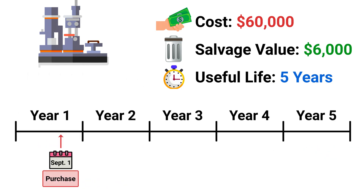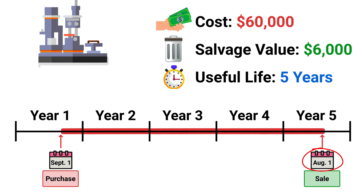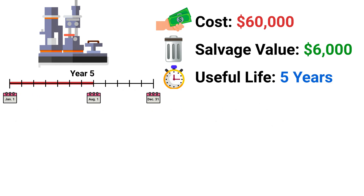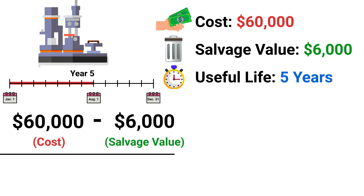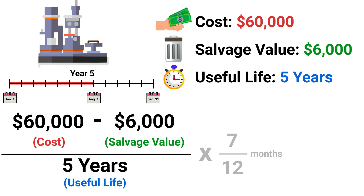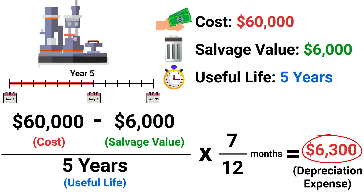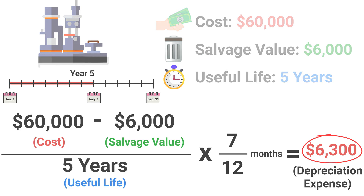Using that same example, let's assume the machine sold five years later on August 1st. To compute depreciation for the seven months of that year before the sale, we take that machine's $60,000 cost, subtract the estimated salvage value of $6,000, and divide that amount by the useful life of five years. Next, we multiply that amount by seven over 12 months, because of the seven months of depreciation in the year. This gets us $6,300 of depreciation for the seven months.